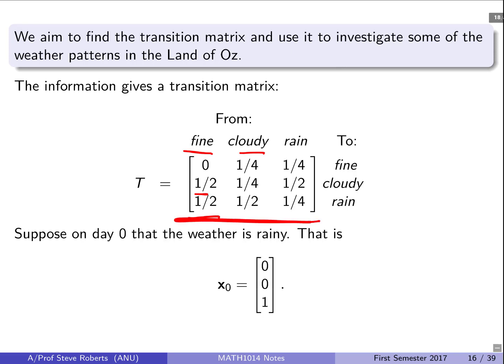OK, so there's our transition matrix. And that will be the way that we can move from one state variable, one probability distribution to another. So suppose on day zero we know that the weather is rainy. So there's a 100% chance of it raining. It's raining. So our state vector at time zero is 001. So let's have a look at what happens into the future.